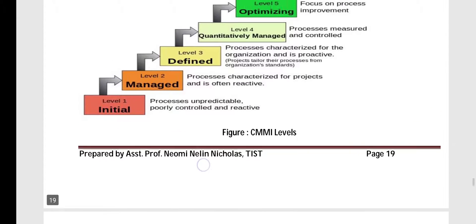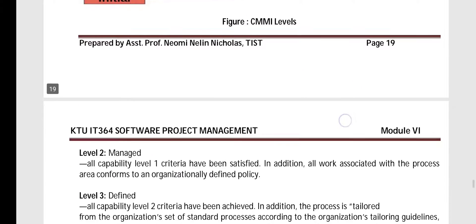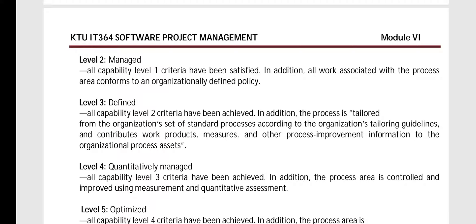Level 1 is the initial or performed level. At level 2, the managed level, all capability level 1 criteria have been satisfied, and all works associated with the process area conform to the organizational defined policy — so organizational policies are dealt with at this level. At level 3, all capability level 2 criteria have been achieved, and in addition the process is tailored according to the organization's set of standard processes.